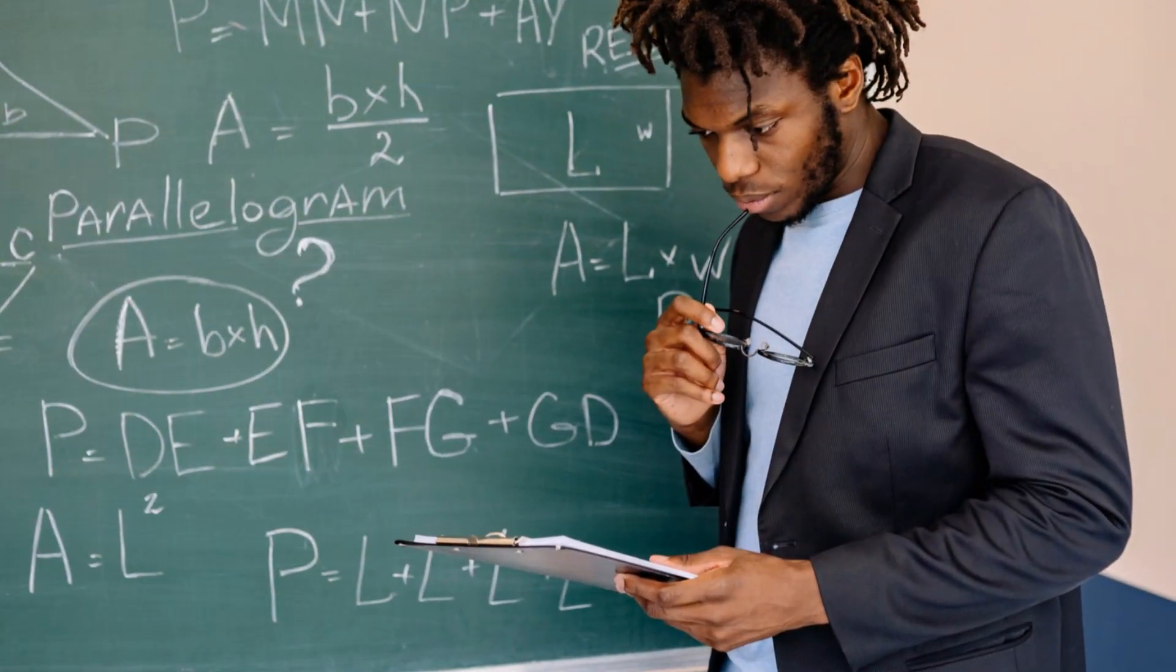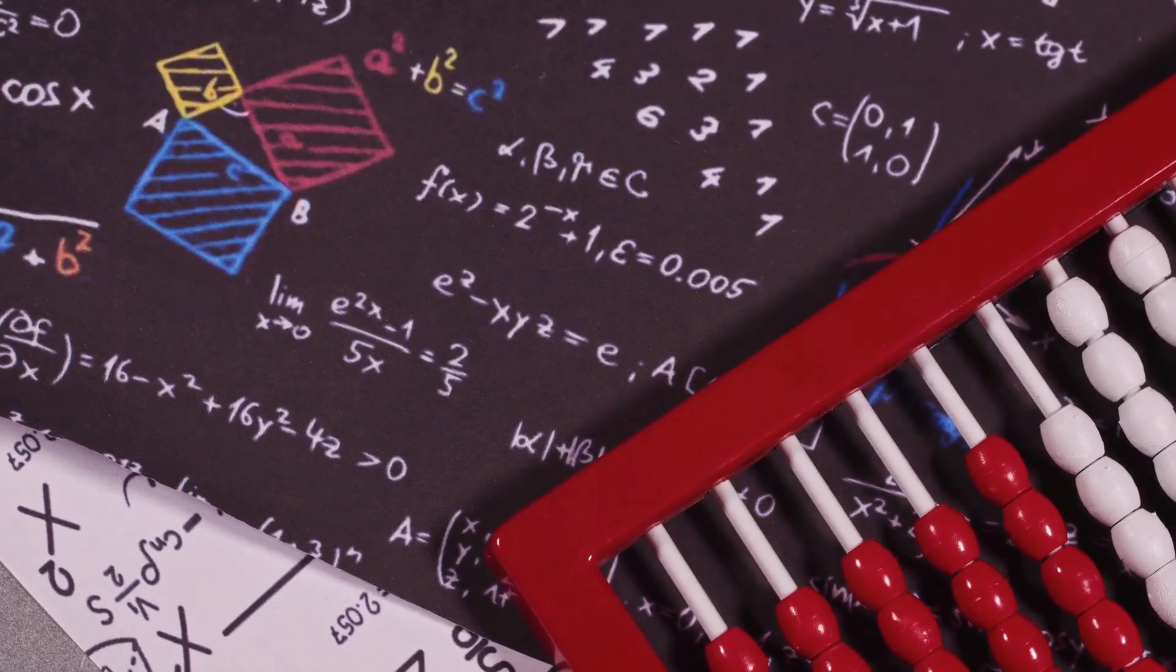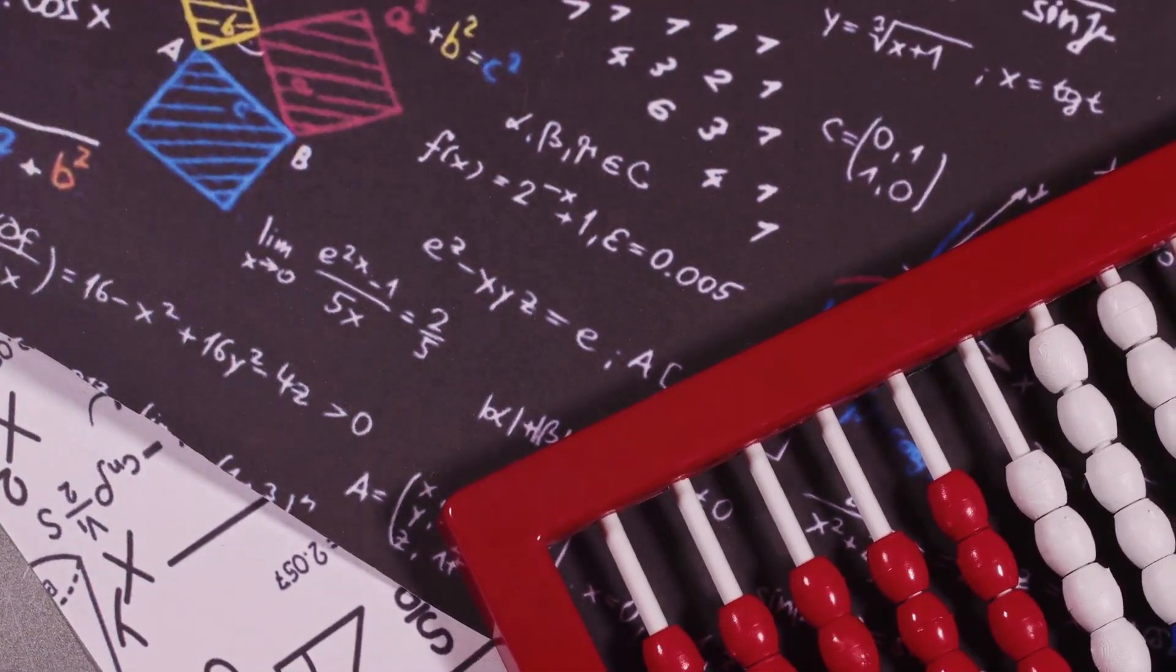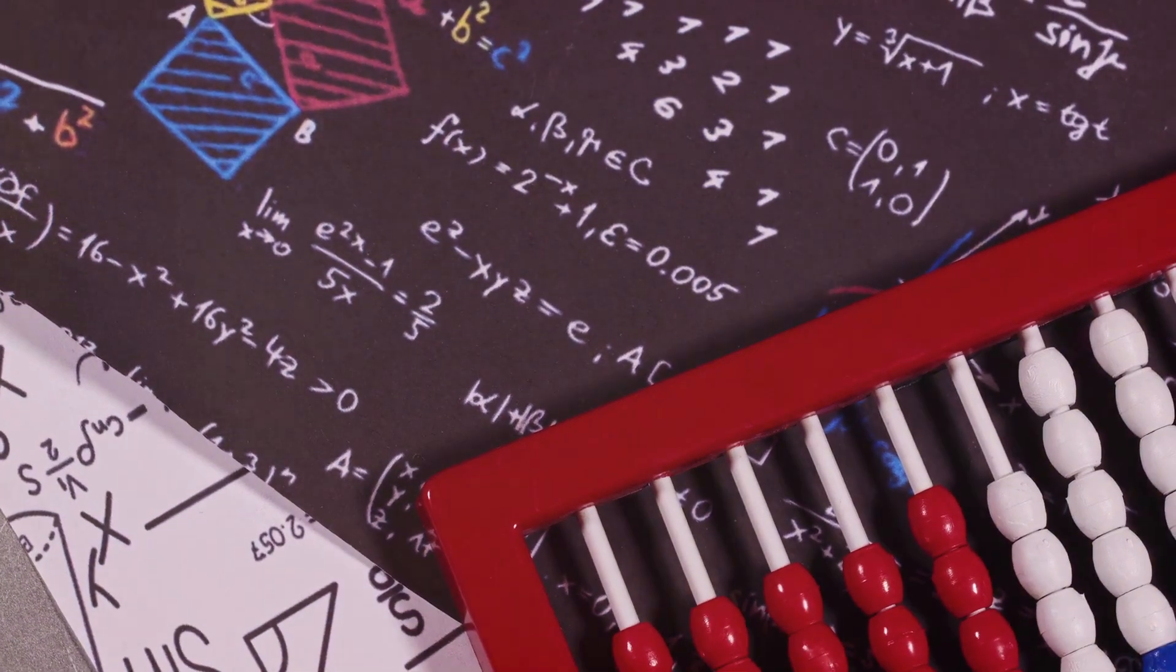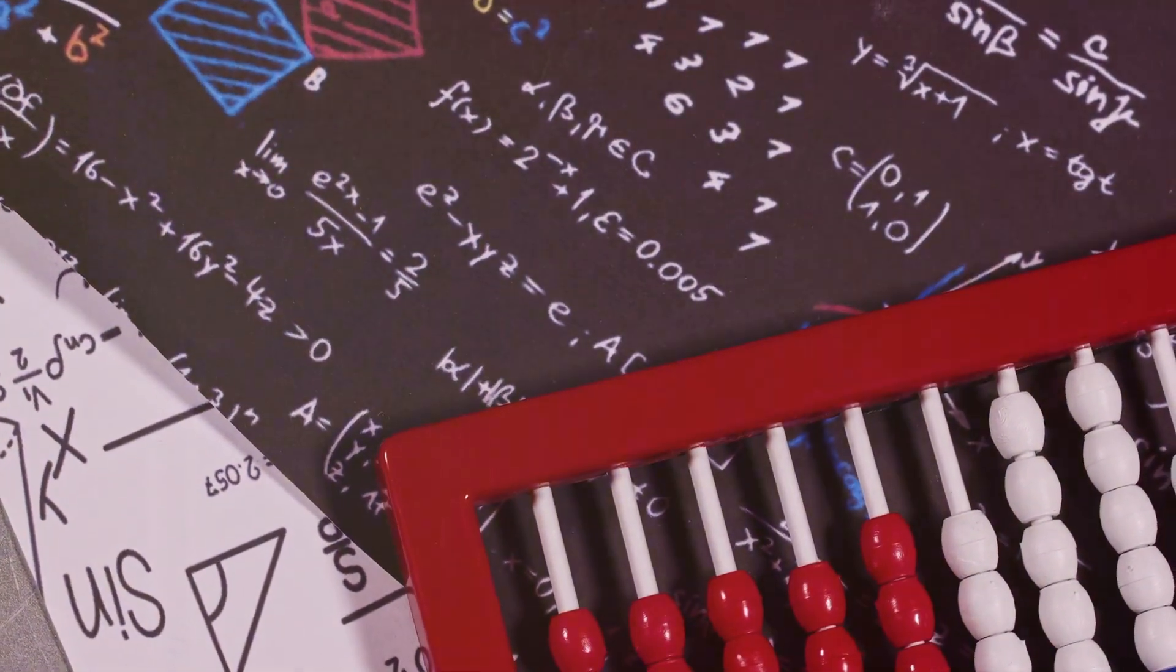Factorials, denoted by an exclamation mark, first appeared in ancient mathematics. Early mathematicians used them to solve combinatorial problems, helping to count permutations and combinations. Their work laid the foundation for our understanding of these mathematical wonders.